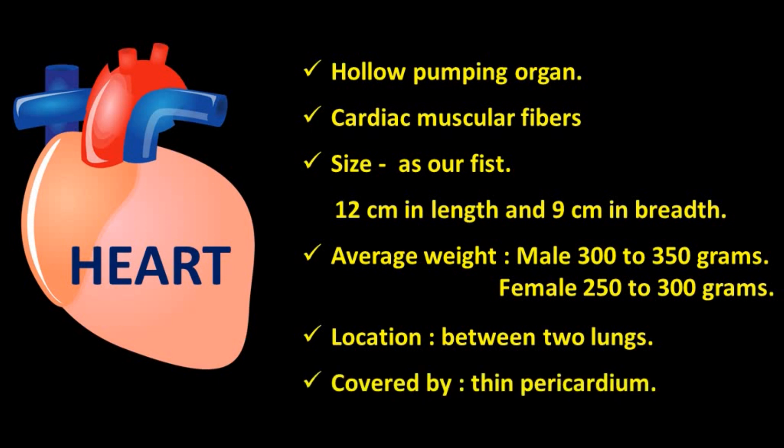Human heart works like a double pump. It is a pumping organ due to the contraction and relaxation of its muscles. Blood is transported to and collected from the different parts of the body, making circulation of blood possible. Oxygen and carbon dioxide are transported to different parts of the body through the human heart.